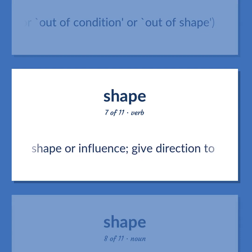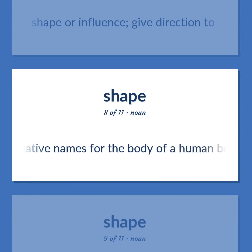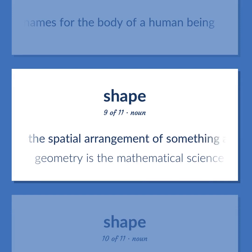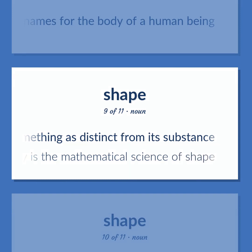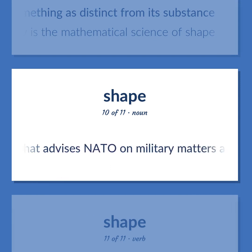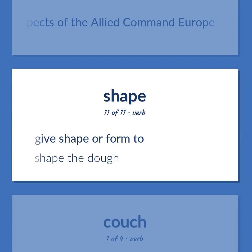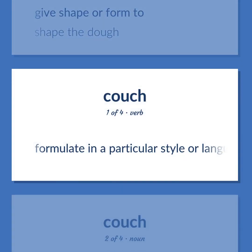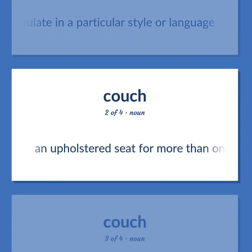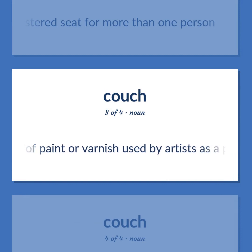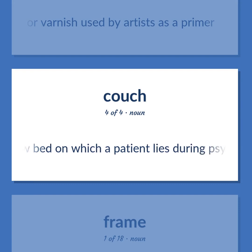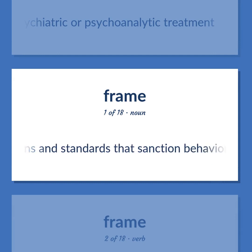Shape: Shape or influence — give direction to. Alternative names for the body of a human being. The spatial arrangement of something as distinct from its substance — geometry is the mathematical science of shape. SHAPE: the supreme headquarters that advises NATO on military matters and oversees all aspects of the Allied Command Europe. Give shape or form to — shape the dough.